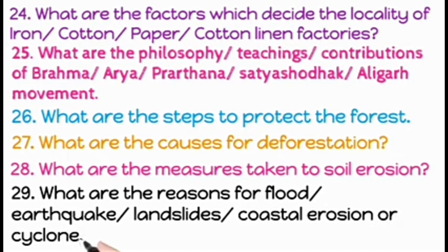Question twenty-four: What are the factors which decide the locality of iron, cotton, paper, and cotton linen factories? Question twenty-five: What are the philosophy, teachings, and contributions of Brahma Samaj, Arya Samaj, Prarthana Samaj, Satyashodak Samaj, and Aligarh movement?